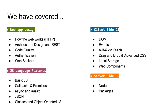We looked at web sockets as well, which we'll cover in this lecture. We covered the basics of JavaScript and the language features of JavaScript — we introduced the idea of callbacks and promises, and related to that there's async and await which we'll talk about. We had a look at JSON and we touched on classes and object-oriented JavaScript, which is a source of new features brought in to make it comparable to other fully featured languages.